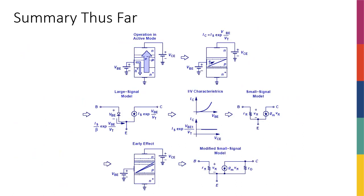Quick recap of where we are: We started with a transistor biased in the active region — base-emitter junction forward biased, base-collector junction reverse biased. We saw why current flows from emitter to collector and why it has an exponential relationship with VBE. The large-signal model had a diode and a voltage-controlled current source, with IB = IC/beta and IE as the sum of the two. The IV characteristics showed constant IC regardless of VCE with no early effect, and we had the initial small signal model.